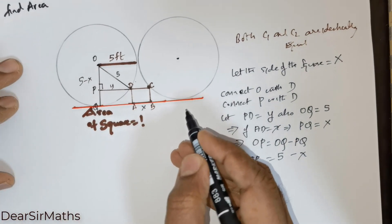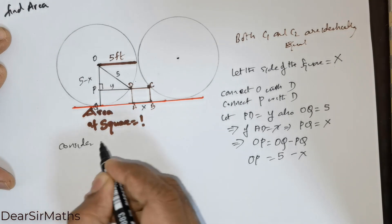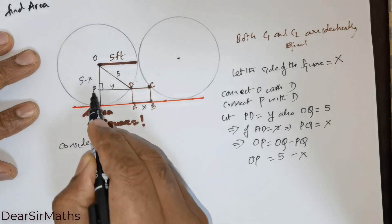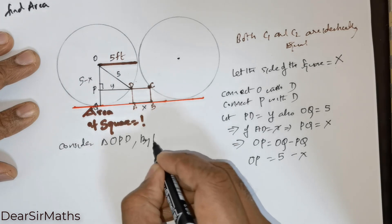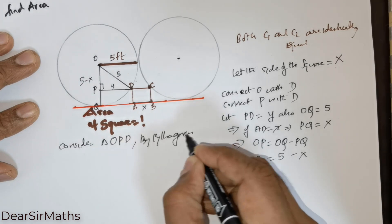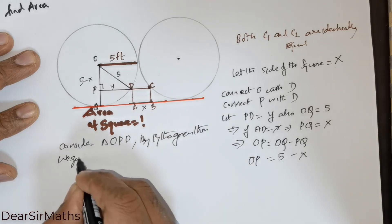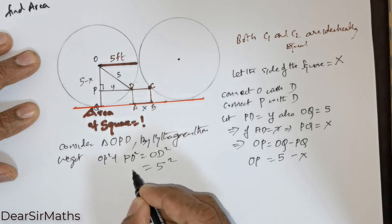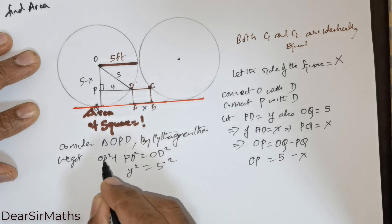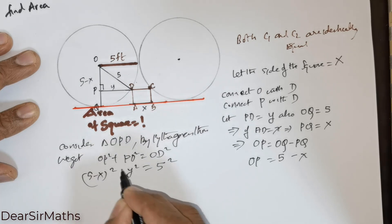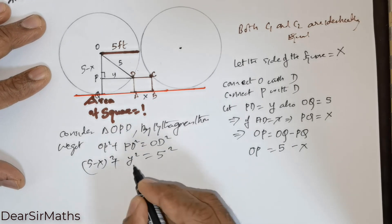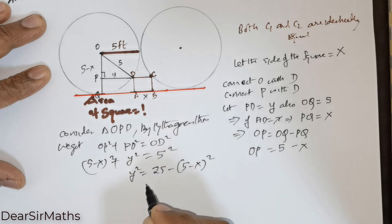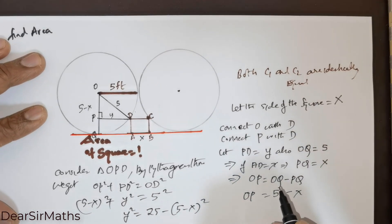This angle at P is 90 degrees. Consider triangle OPD. Since angle at P is 90°, by the Pythagorean theorem we get OP² + PD² = OD². OD² is 5² = 25, PD² is Y², and OP² is (5 − X)². Solving for Y: Y² = 25 − (5 − X)². This is equation 1.